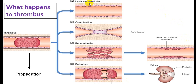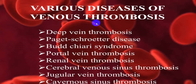Thrombus outcomes — propagation, resolution, organization, re-canalization, incorporation, and embolism — are all possible consequences. Lysis and resolution produce scar tissue; partial canal opening is re-canalization; dislodgement leads to thromboembolism and can propagate to proximal vessels. Venous occlusion examples: deep vein thrombosis, Budd-Chiari syndrome, portal vein thrombosis, renal vein thrombosis, cerebral sinus thrombosis — most commonly superior sagittal sinus — jugular vein involvement, and cavernous sinus thrombosis.